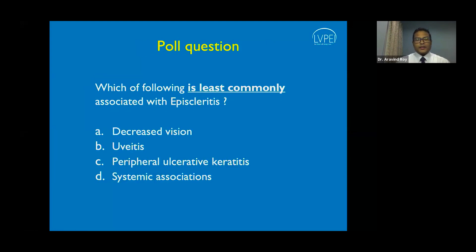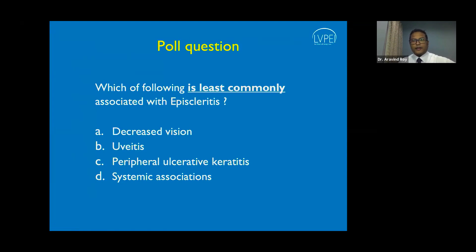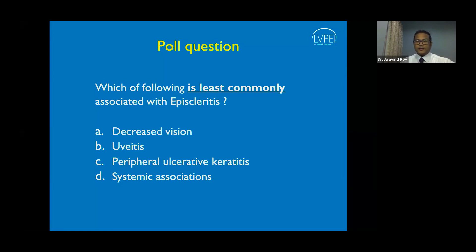Regarding the least commonly associated symptom with episcleritis: peripheral ulcerative keratitis does not typically occur or is very rarely associated with episcleritis. Episcleritis can present with decreased vision mainly due to ocular irritation, there may be a transient uveitis, and there are systemic associations. However, peripheral ulcerative keratitis is more commonly associated with the more severe form — scleritis.